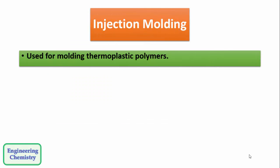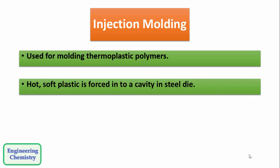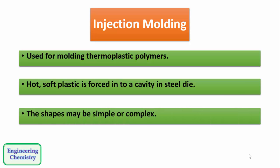Injection molding is used for molding thermoplastic polymers. In this method, hot and soft plastic is forced into the cavity in a steel die. The most important thing about injection molding is the shapes of the articles may be simple or complex.